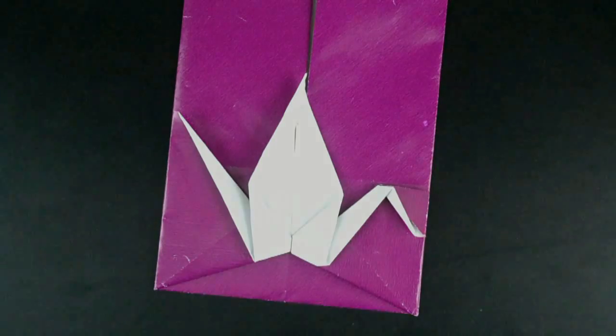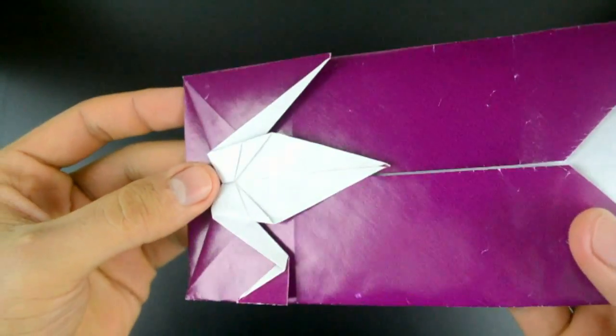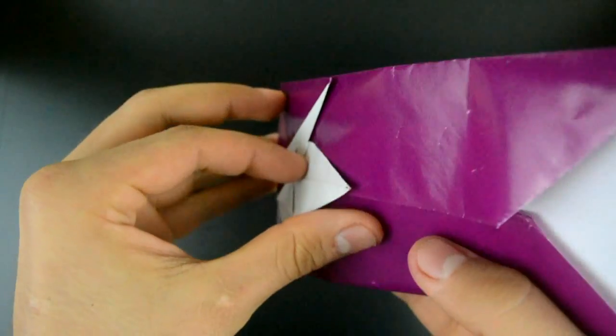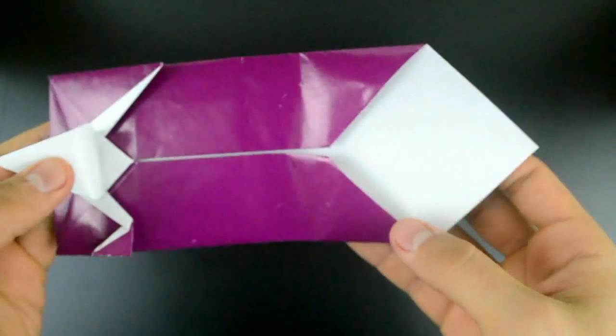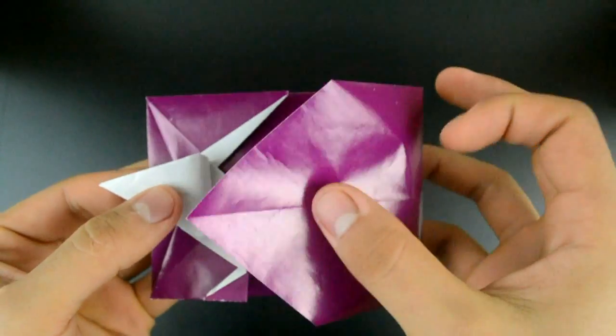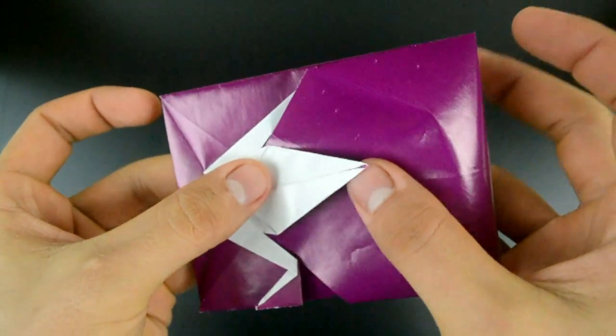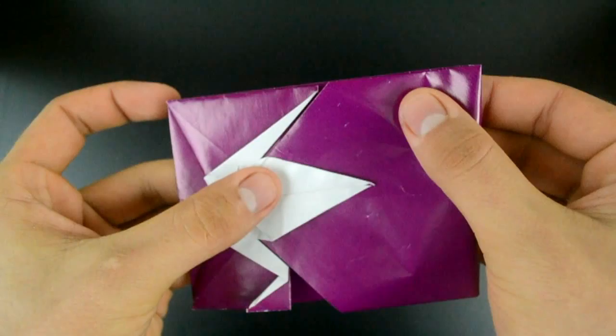And to make the last detail, on the wing of the tsuru we have a little space, a pocket. Let's fit this corner here on the same space, on the pocket. Like this. Then just make a crease.